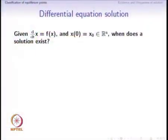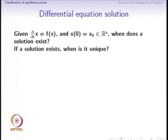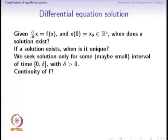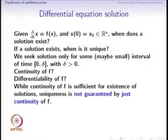Given d/dt of x equals f and the initial condition x(0) equals x0, an element in Rn, we ask: when does the solution exist, and when is it unique? Under what conditions on f at the point x0 do we have a solution, and when is it unique? We are interested in a solution possibly for a very small interval of time — it might be difficult to guarantee existence and uniqueness for a large duration, but we need only an interval 0 to delta, where delta is greater than 0, possibly quite small. We ask: is continuity of f the important property, or is differentiability of f at the point x0 required?